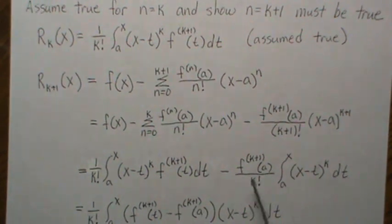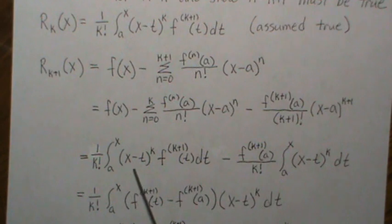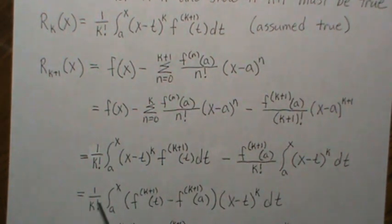The k factorial comes out front. And then we have the x minus t to the k, that's this. And then we have to bring those in here.